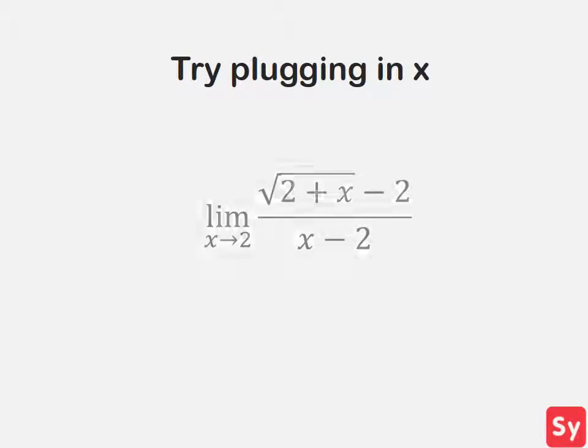Let's see an example. We have the limit as x approaches 2 of the square root of 2 plus x minus 2 all over x minus 2. We'll try plugging in 2 in for x. This gives us 0 over 0, an indeterminate. That didn't work, so we'll go to the next step.